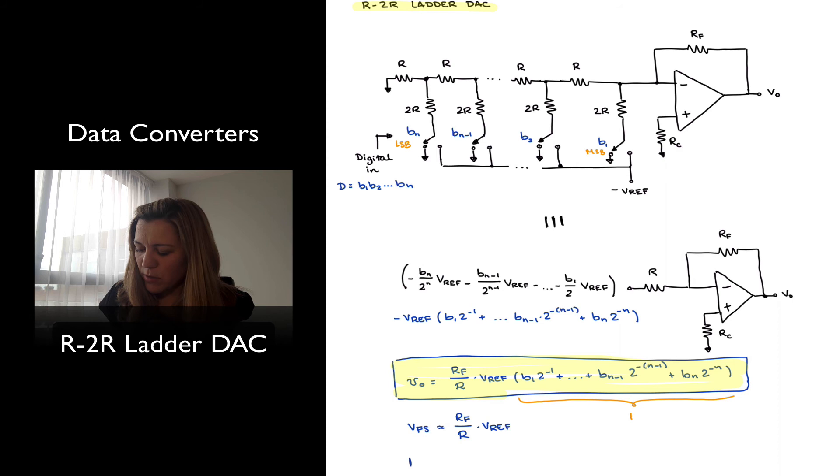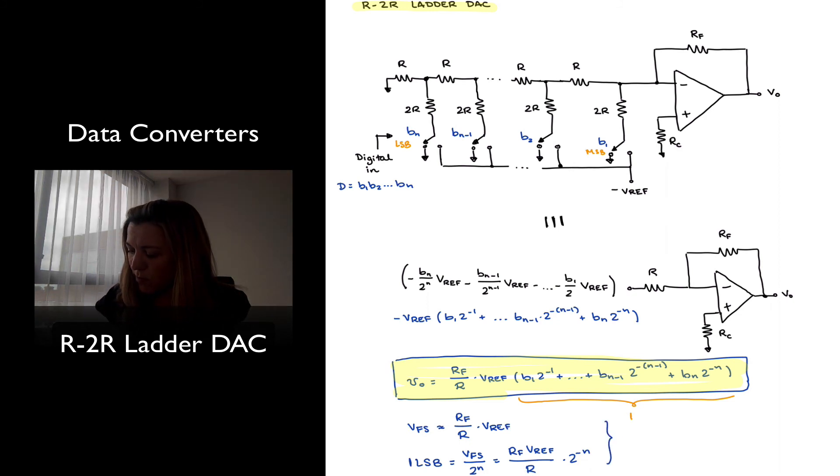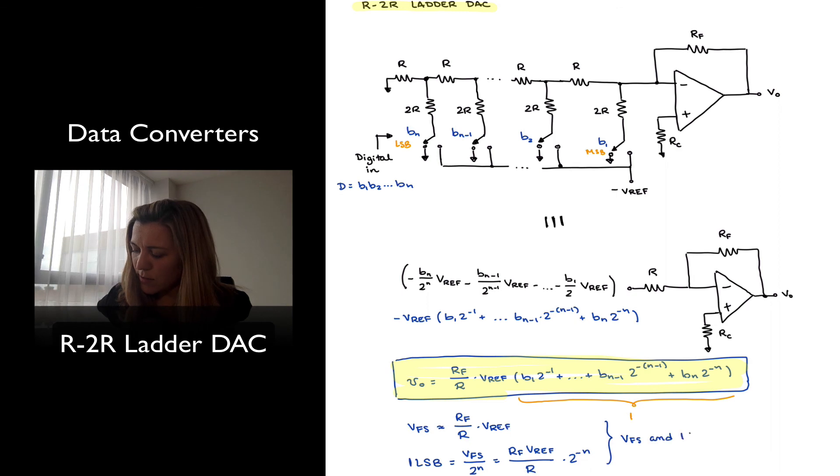My least significant bit, 1LSB, is equal to VFS divided by 2 to the n, or RF times VREF divided by R times 2 to the negative n. And this is also half the size of that for the linear combiner. So VFS and 1LSB are half of those of linear combiner DAC.